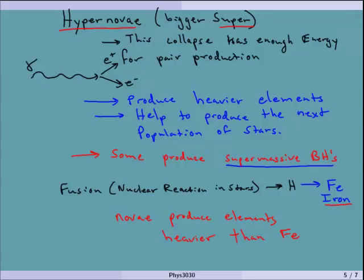We all have elements in us that are heavier than iron, and we have iron, carbon, oxygen, nitrogen — all of these things had to have been made in stars. This is the idea that we are stardust — we are really the ashes of nuclear reactions. That's where this idea comes from; it's discussed a little bit at the beginning of your book.